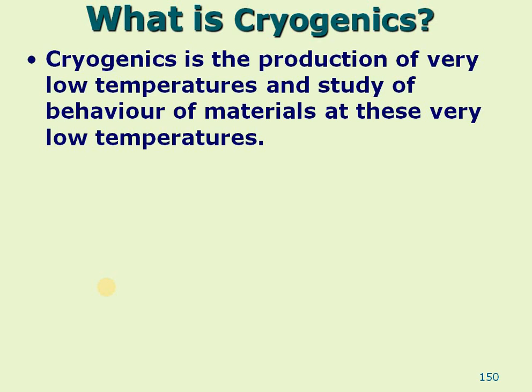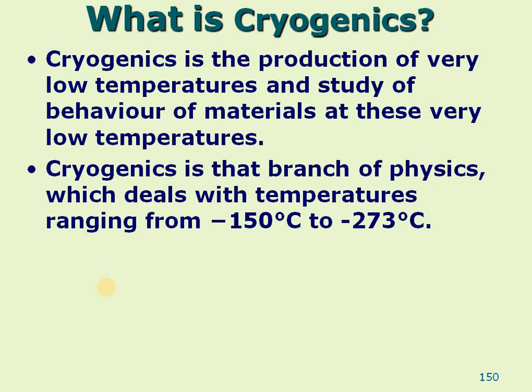Technically, cryogenics is that branch of physics which deals with temperatures ranging from minus 50 degrees Celsius to minus 273 degrees Celsius. This is the technical definition — all temperatures falling under this range can be classified as cryogenic temperatures. All temperatures below minus 150 degrees Celsius are classified as cryogenic temperatures.